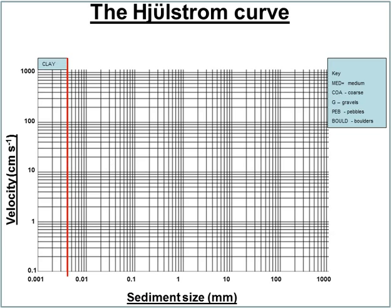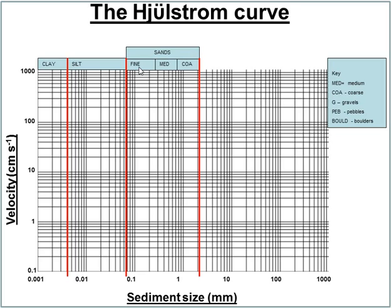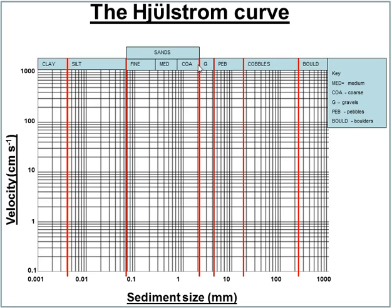It's split with sediment size along the bottom and velocity in centimetres per second on the side. The sediment size is broken down further into various different sediments: the smallest ones are clays, then silts, then various sands including fine, medium and coarse, then gravels, pebbles, cobbles, and boulders.